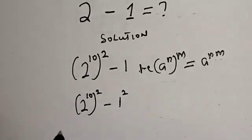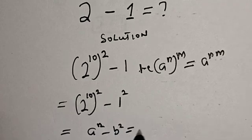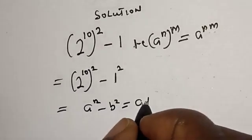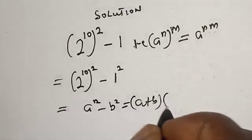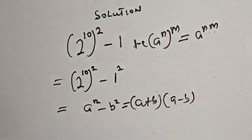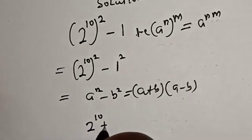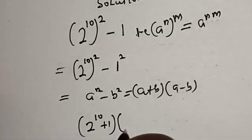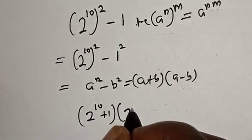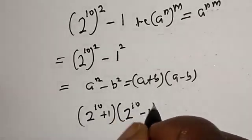This is a difference of two squares. a squared minus b squared equals (a plus b) multiplied by (a minus b). Now this is (2 raised to power 10 plus 1) multiplied by (2 raised to power 10 minus 1).